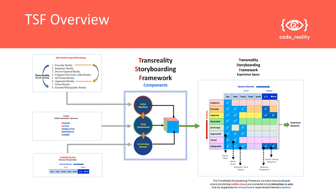The trans-reality storyboarding framework is a matrix that storyboards storytelling realities — those are the rows in the grid — connected by interactions, shown as arrows coming out of the page along the z-axis, and these act as gateways for the sensory or sensor experiences and channels shown horizontally at the top. This experience space is ultimately what we're trying to create: we choose our realities, our interactions, and our sensory engagement based on the story we want to tell, and we end up with an experience space we need to generate and produce.